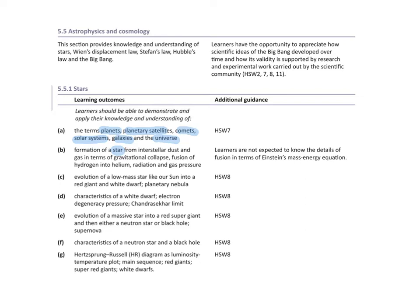We will also look at how low mass stars like our Sun evolve into a red giant and white dwarf, and the characteristics of a white dwarf. We will also talk about electron degeneracy pressure and the Chandrasekhar limit. We will look at the evolution of massive stars into red supergiants and then either a neutron star or a black hole after a supernova, and we will also look at the Hertzsprung-Russell diagram, which helps classify stars.